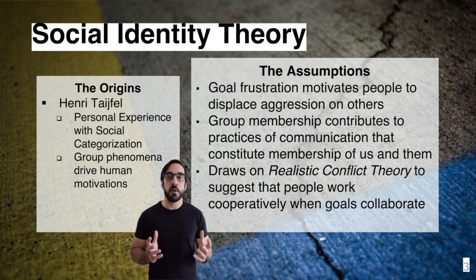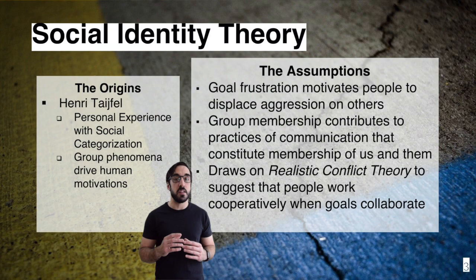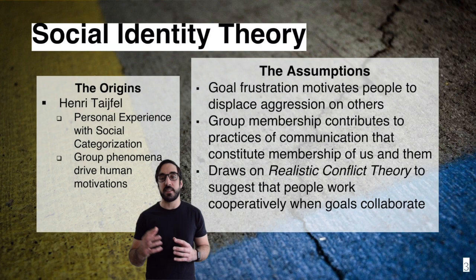There are three principal assumptions of social identity theory. The first is that when individuals are unable to achieve their goals or otherwise frustrated by their efforts in society to achieve status, they often displace that frustration onto other individuals as they see those individuals hierarchically organized above them or below them. In this sense, social identity theorists assume that goal frustration motivates people to displace their aggression onto others.